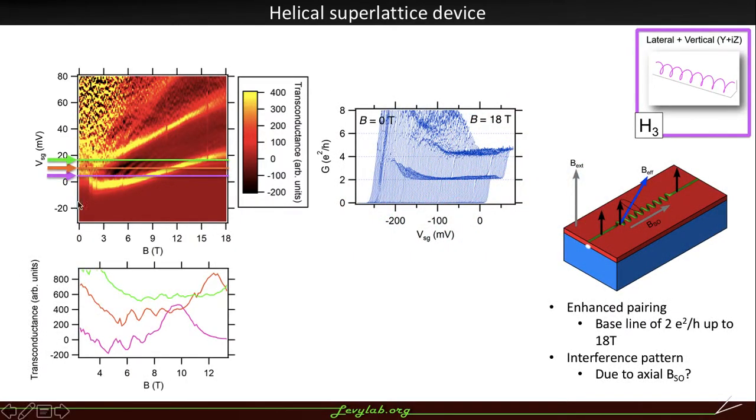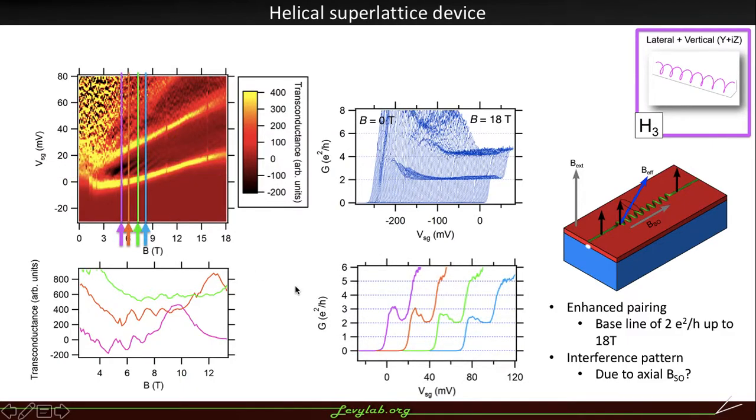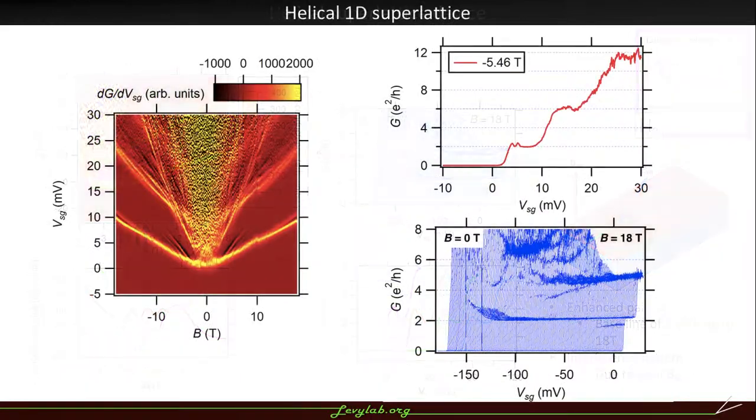And so if we look at the line cuts of this transconductance, we actually do see a decrease in the transport, which is a function of both the magnetic field and the energy or the side gate value. So this is potentially an interference pattern that we see due to this engineered axial spin orbit coupling. And we have seen this effect in several different helical superlattice devices.